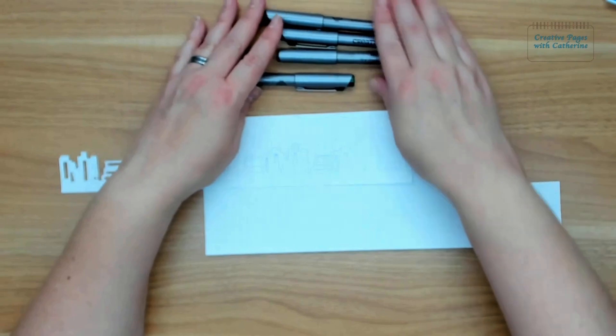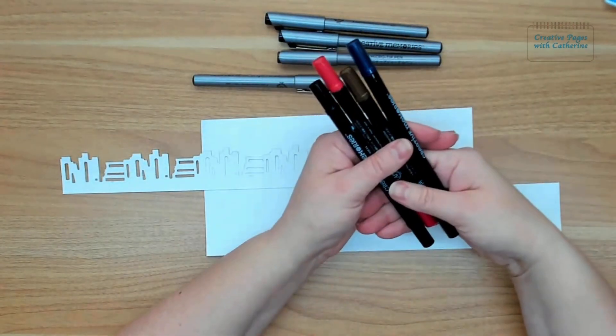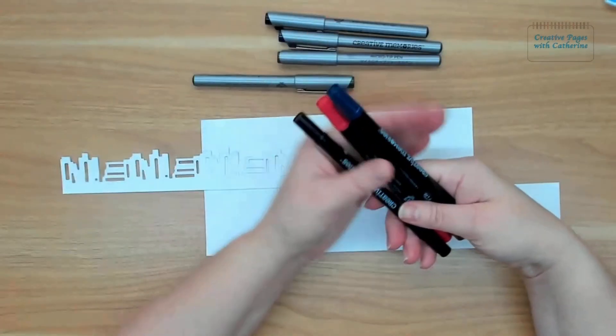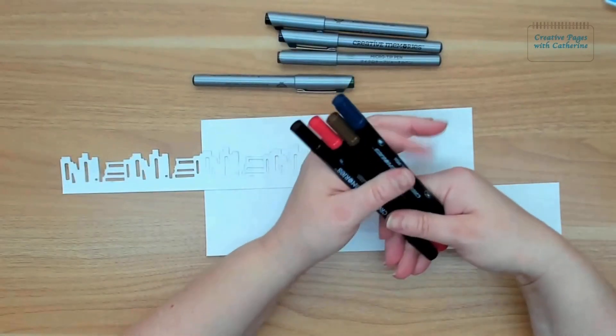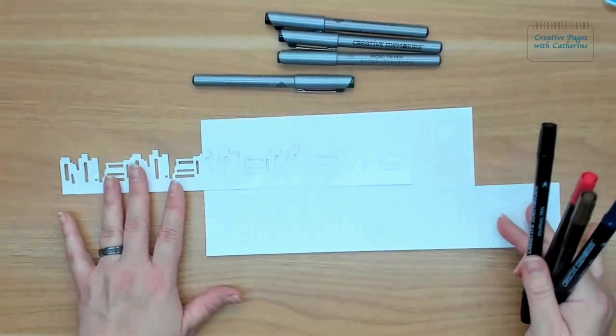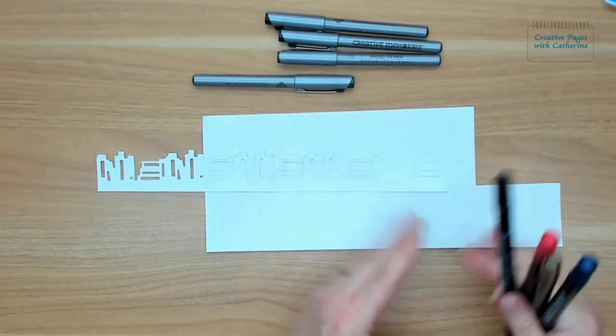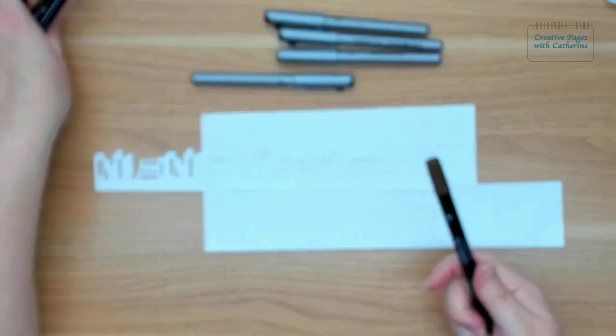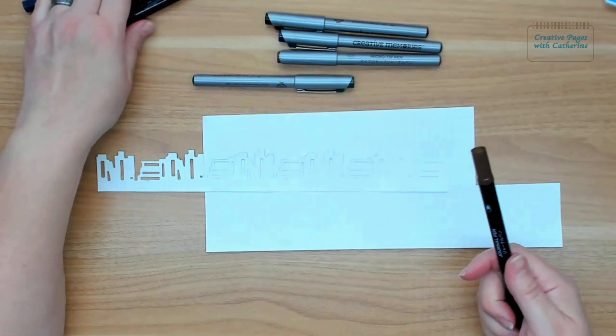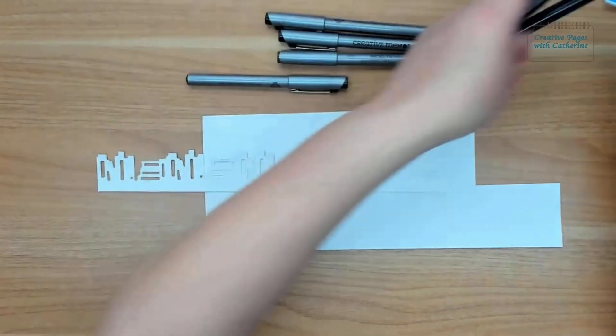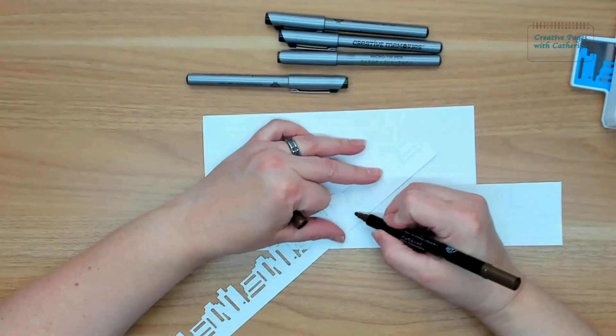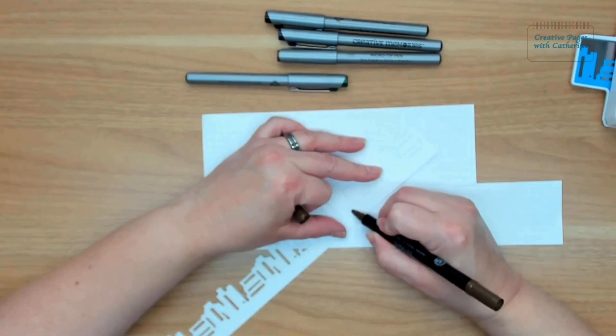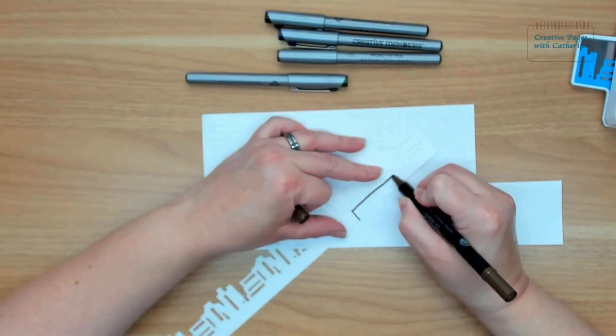I also have several of our dual tip pens. The reason I like the Creative Memories pens is because they are safe to use in our scrapbooks. So you don't have to worry about this border being right next to a photo and having any issues with your photos later down the road. I'm going to try to keep my pens from rolling around on my desk.